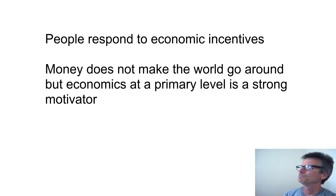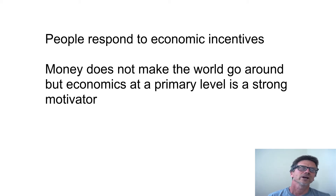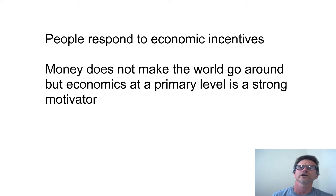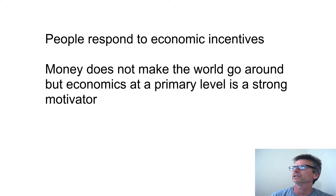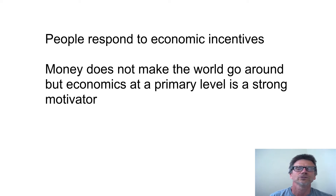Number two: people respond to economic incentives. If you know Maslow's hierarchy of needs, humans are complexly stratified in their psychological motivations, but at least at the bottom primary motivation tier, economics is a strong motivator. Money doesn't make the world go around, but at a primary level, it gets people to work, to act on their incentives, and to achieve a goal.